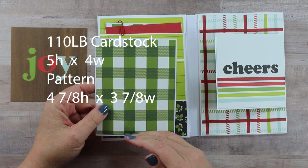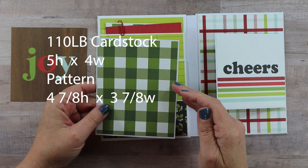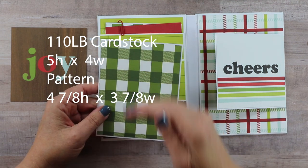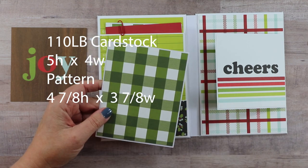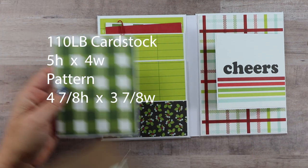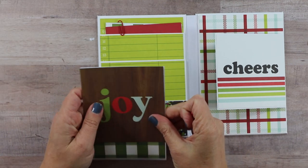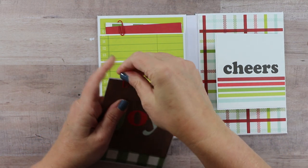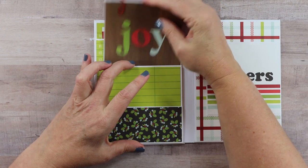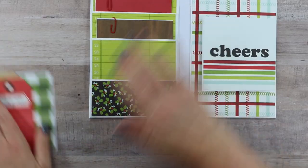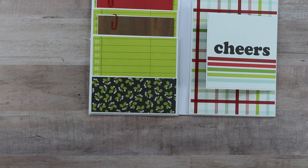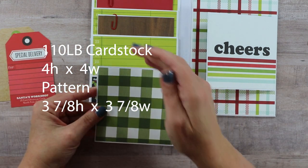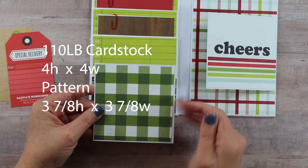Our second set of inserts is going to be five high by four wide for the cardstock, and the pattern paper is four and seven-eighths high by three and seven-eighths inch wide. Here's an additional image clipped on, and this will be slipped into that middle pocket.